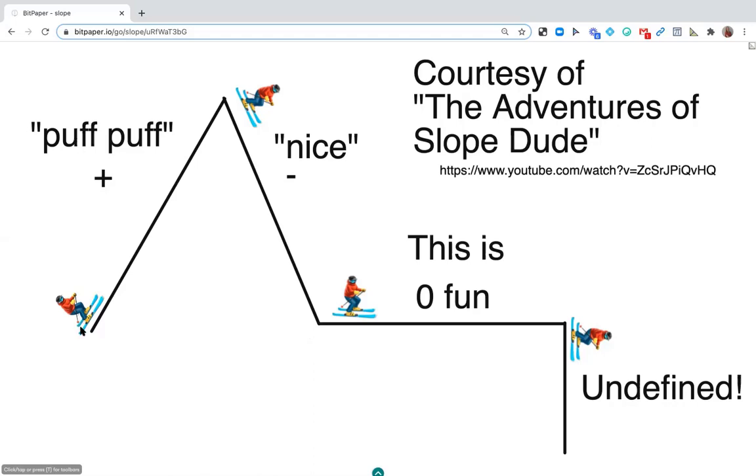If I was on skis and I was trying to go uphill, most likely that would be very difficult. So I might run out of breath and say puff, puff, positive. But then when I get to the top of the mountain, I get to go downhill, nice and easy, nice, negative. So a line that's going up from left to right is positive. A line going down left to right is negative.